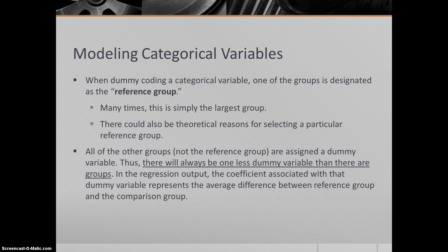Usually this is the largest group that makes your estimates the most stable, statistically speaking. There could also be theoretical reasons for selecting a particular reference group. Maybe there is an experiment and you have a control group that's receiving no treatment, and three different groups have slightly different treatments. The reference group might be the control group. What happens is all the other groups are going to be compared against that reference group. All of those other groups, not the reference group, are assigned a dummy variable. You end up creating new variables. There's always going to be one less dummy variable than there are groups because the reference group doesn't get one.